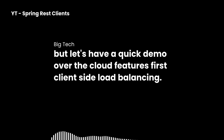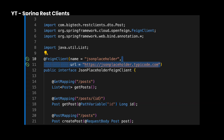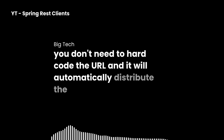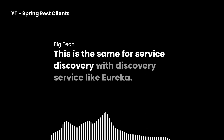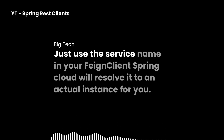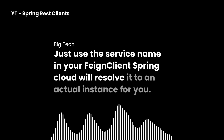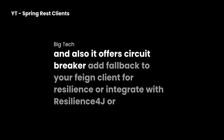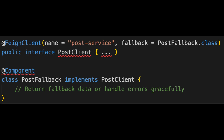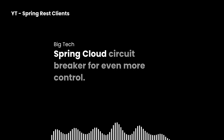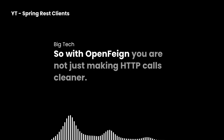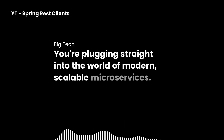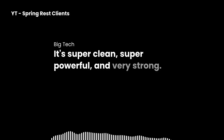Let's have a quick demo of the Spring Cloud features. First, client-side load balancing: if you use Spring Cloud Load Balancer, you just use a service name and don't need to hard-code the URL — it will automatically distribute requests. This is the same for service discovery: with a discovery service like Eureka, just use the service name in your Feign client and Spring Cloud will resolve it to an actual instance. No more changing URLs when things scale. And it also offers circuit breaker support — add a fallback to your Feign client for resilience, or integrate with Resilience4J or Spring Cloud Circuit Breaker for even more control.